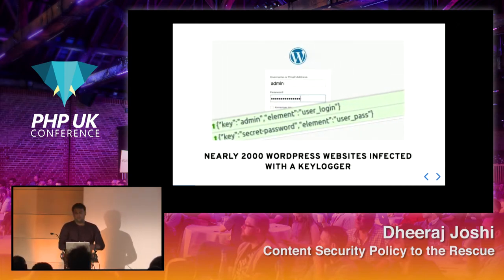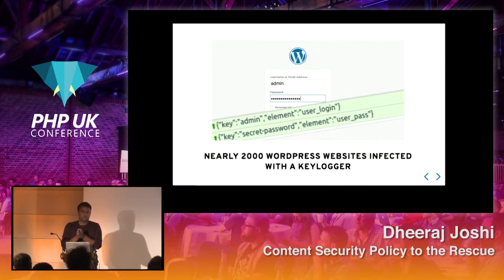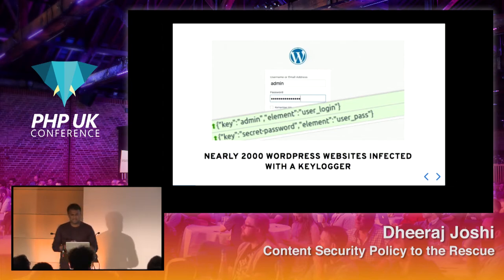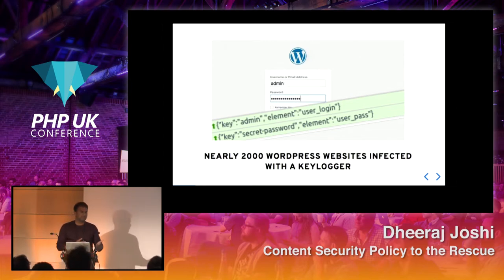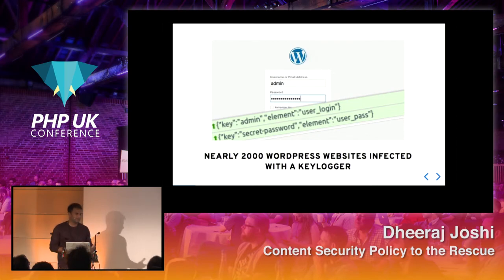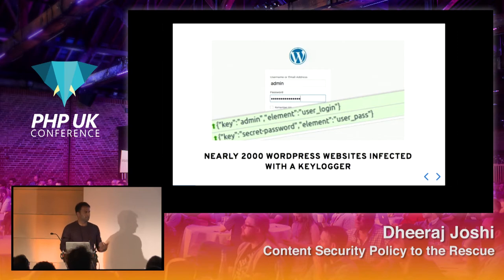Similarly, a couple of months back, WordPress blogs were known to have recorded user credentials, which is very dangerous because it acts like key loggers — sending credentials to attacker endpoints.